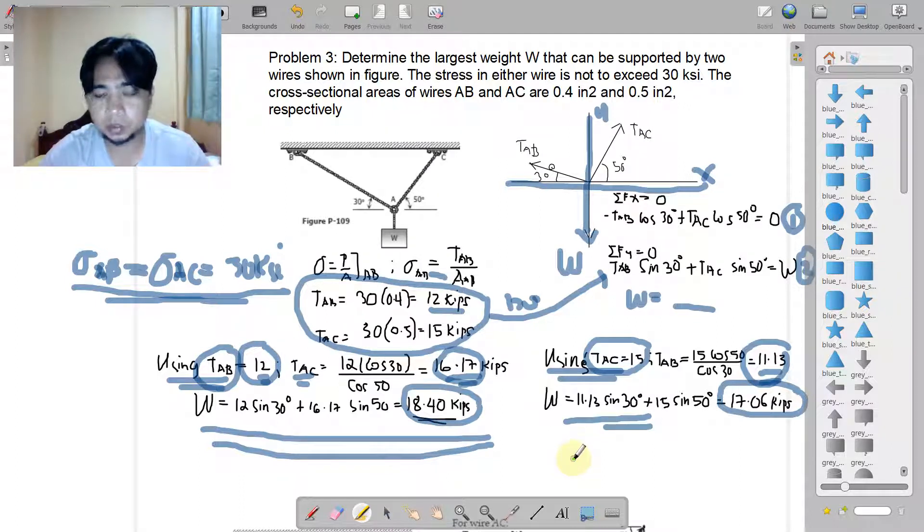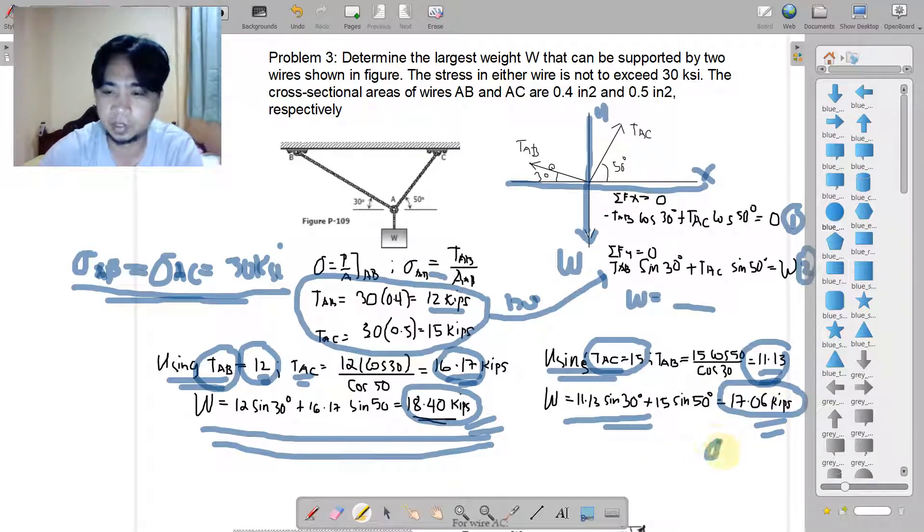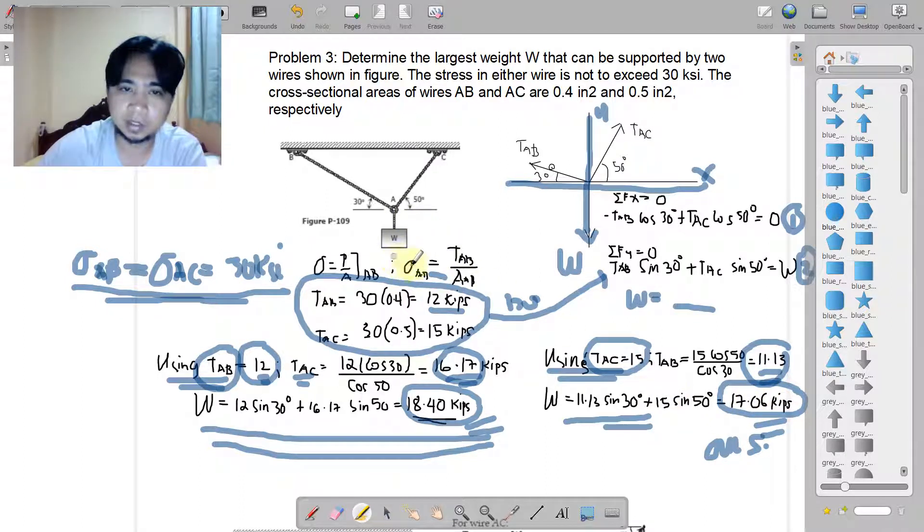So with these two conditions, we are going to choose now between 18.4 and 17.06. In choosing for the maximum W that the load that this cable could carry, we choose always the lower value. So this is the answer actually, the lower value. Why lower value? Because choosing 18.4 would compromise one of the cables. Choosing 18.4 would fail either AC or AB. Unlike choosing the lesser one, both AB and AC could resist this lower value.